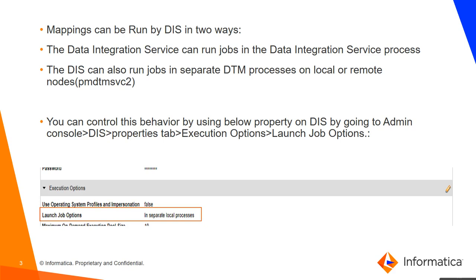The second way of running the mapping is when the mappings are allocated to DIS child processes like PMDTM SVC2. Here the mapping compilation, simplification, and executions are performed by PMDTM SVC2. This is the most common way of running mappings on DIS. You can control this behavior by using the 'Launch Job Options' property on DIS, where you can choose the mode in which you want to run a mapping.